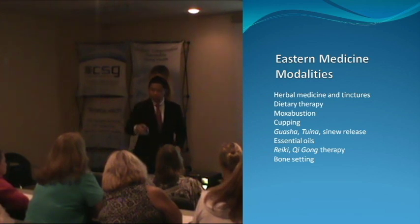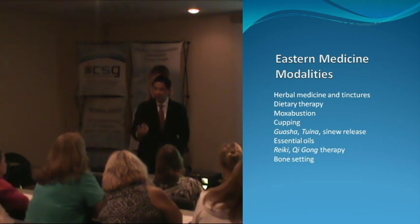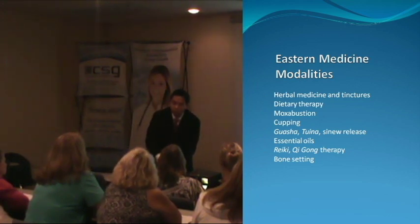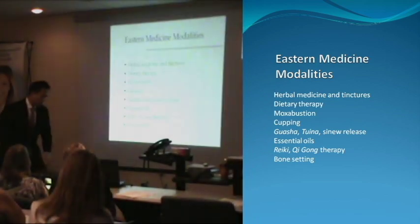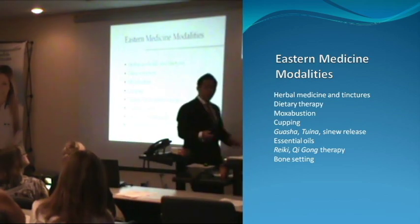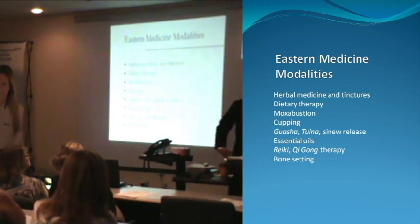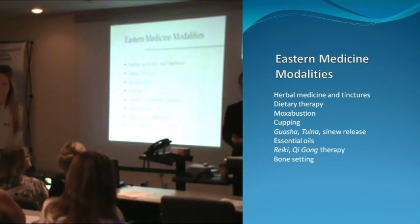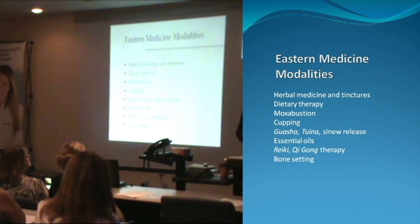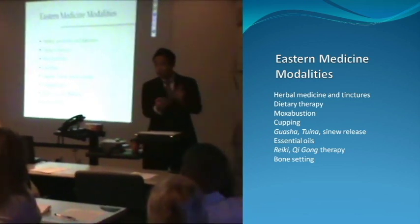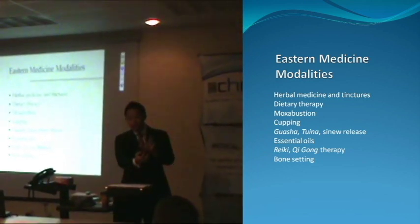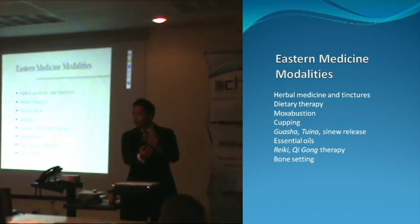Immediately, you see a suction vacuum pulling up the skin and the flesh. Why do we do that? A lot of times people have pain along, let's say the low back — a classic area — but there's no bruising visible. The blood and the Qi became stagnant, but you don't see it at the skin level.